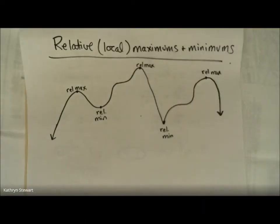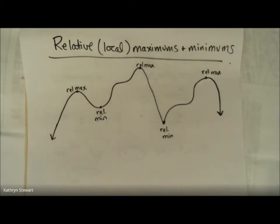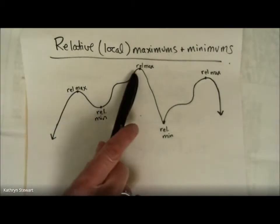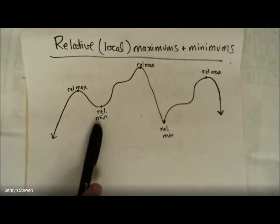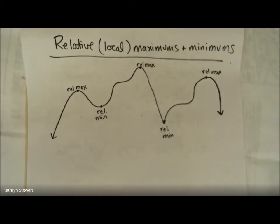We have spoken about how to find absolute maximums and minimums of functions. Today we're going to talk about how to find relative, also called local, maximums and minimums. Here's a kooky looking function and I've labeled some relative maximums and relative minimums.